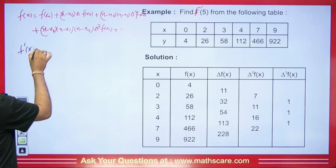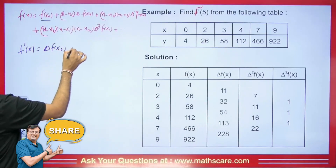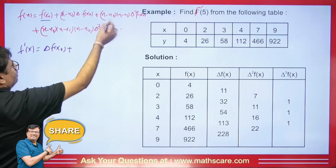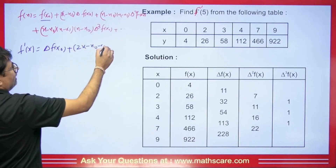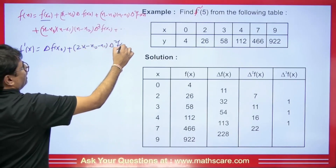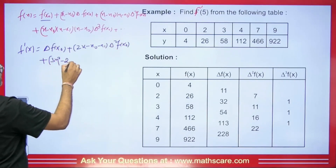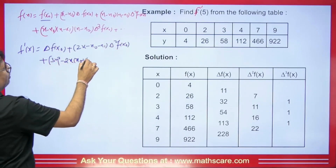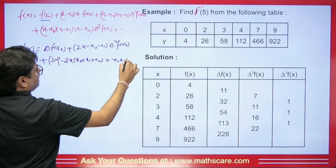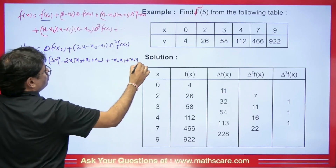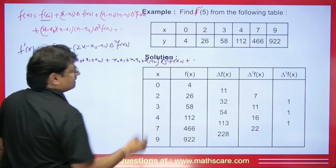So f'(x): the constant term f(x0) becomes 0. Here we get Δf(x0). When we multiply and expand (x−x0)(x−x1), we get x², whose derivative is 2x, minus (x0 + x1), so that term with Δ²f(x0). When all three factors multiply, we get x³, so its derivative is 3x² minus 2x·(x0 + x1 + x2), plus (x0·x1 + x0·x2 + x1·x2), all multiplied by Δ³f(x0).